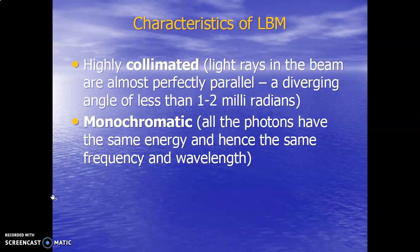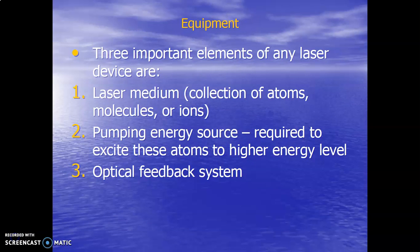We produce a high amount of light energy focused within one or two milliradians. We use different lenses to concentrate the high amount of light energy onto a single point. The diameter obtained after cutting is somewhat larger than the laser beam. Monochromatic means all the photons have the same energy, the same frequency, and the same wavelength. The three main components of a laser machine are: a laser medium (a collection of atoms, molecules, or ions), a pumping energy source required to excite these atoms to a high energy level, and an optical feedback system which is the focusing system.